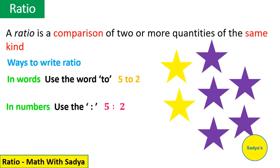We can also write ratio in numbers. First, we use the colon sign between the numbers. So, 5 to 2. This colon sign is read as ratio as well as 'to'. So, we can say 5 ratio 2 or 5 to 2. We can also write the ratio in fraction form. First quantity comes in the numerator and second quantity in the denominator. So, these are the three ways of writing ratio.